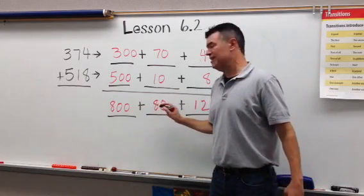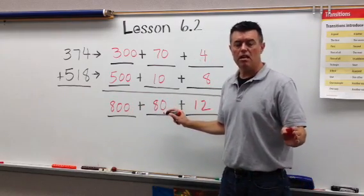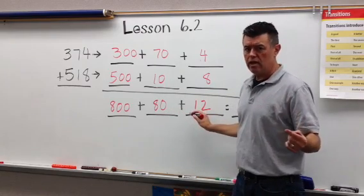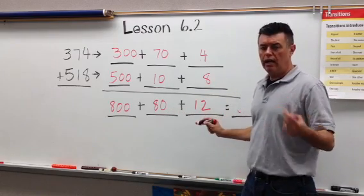You have to think 800 plus 80. That's easy. 880 plus 10 more. 890 plus 2 more. 892.